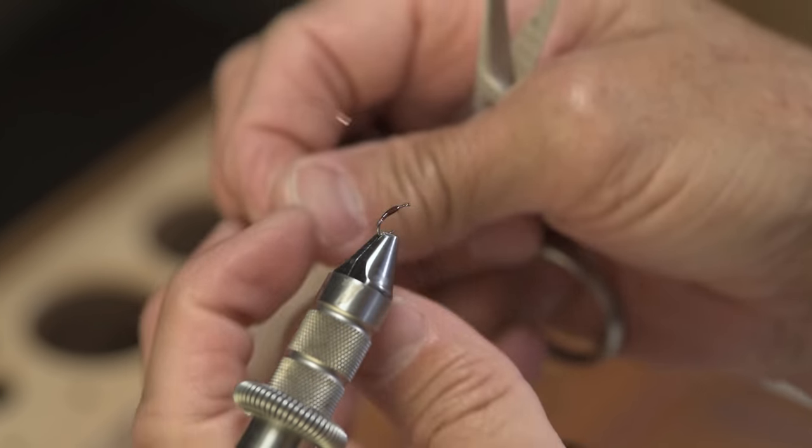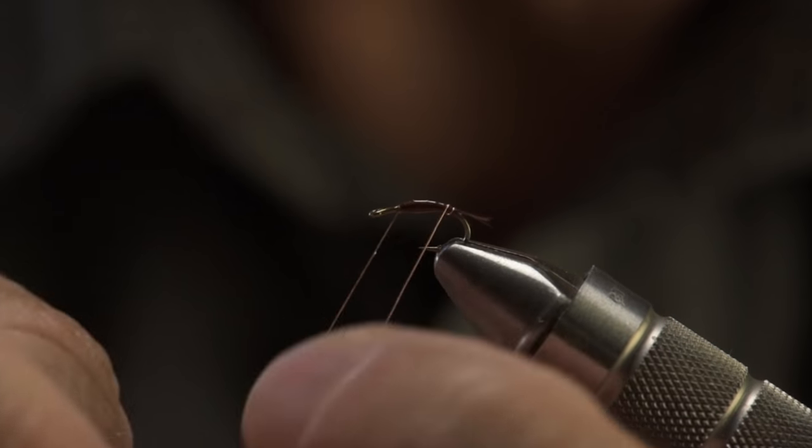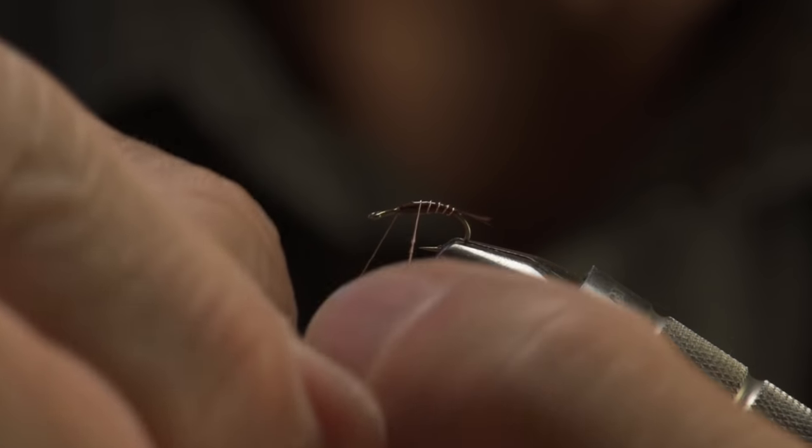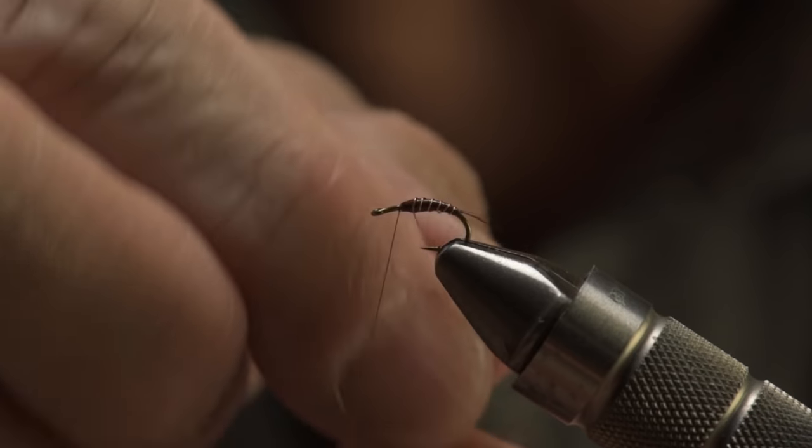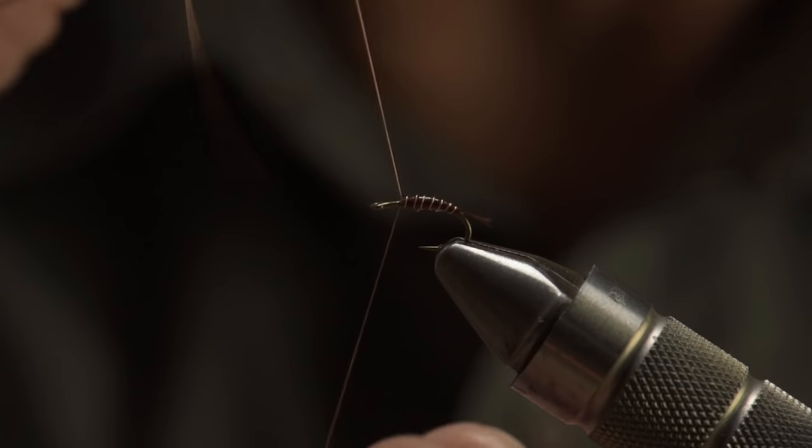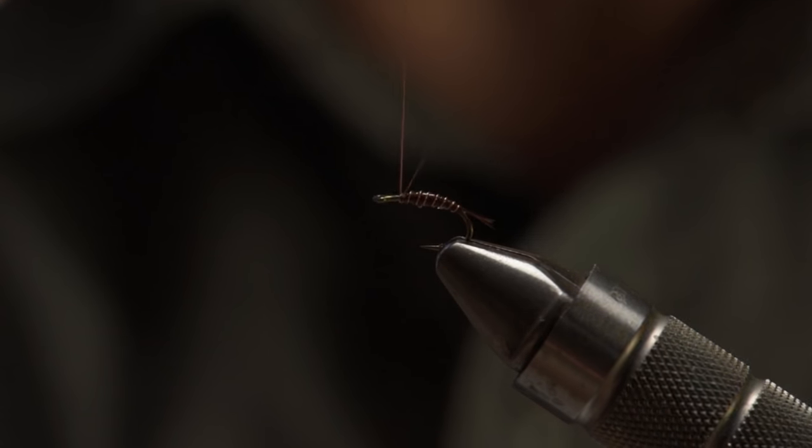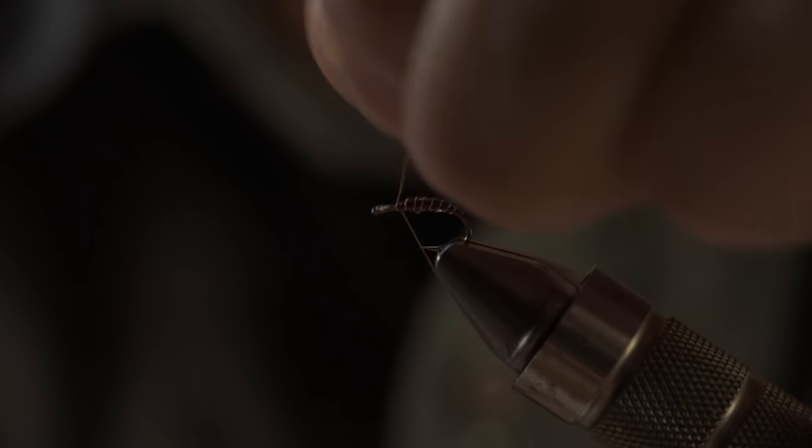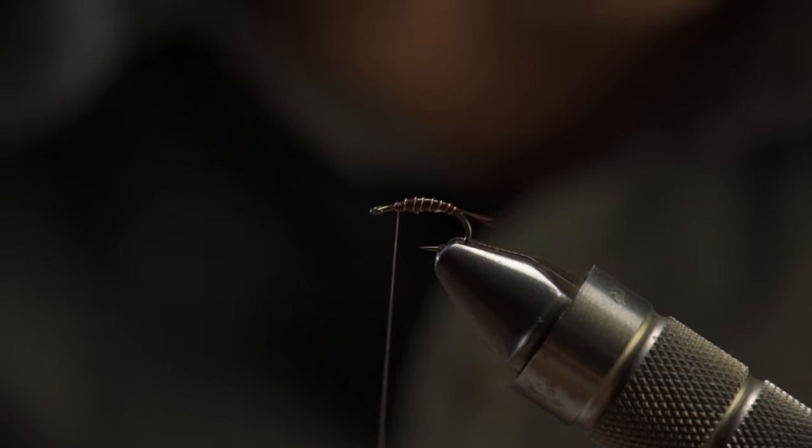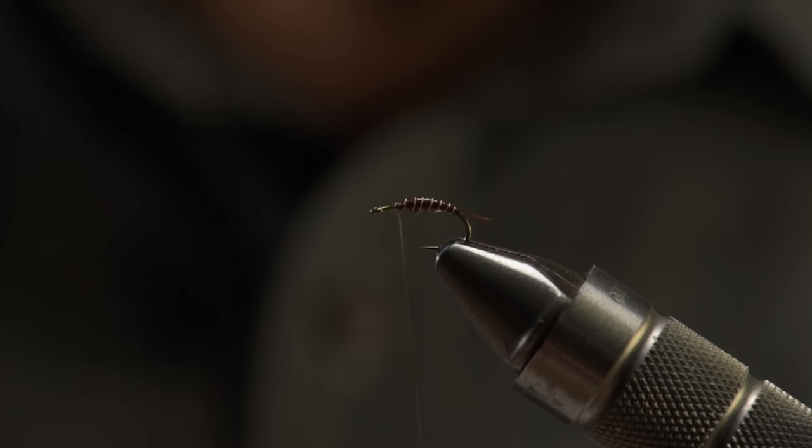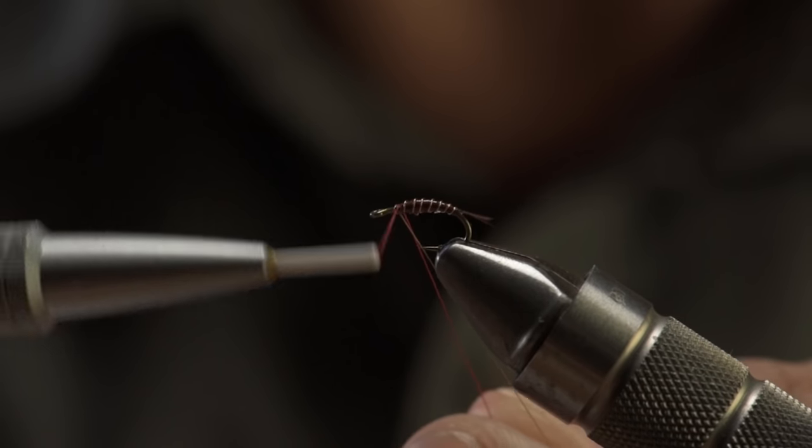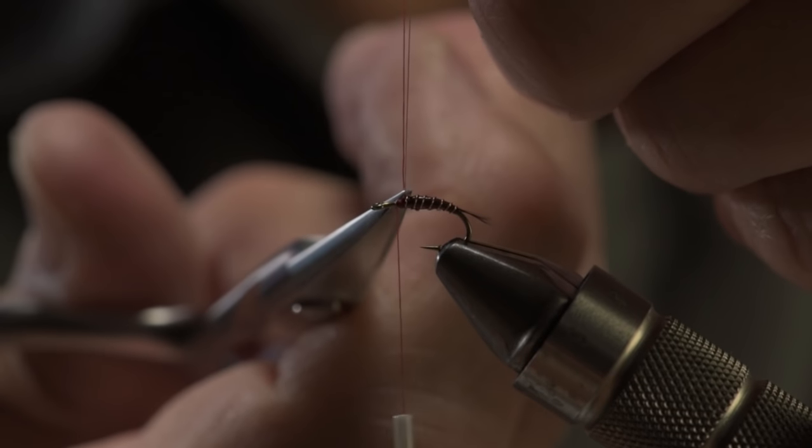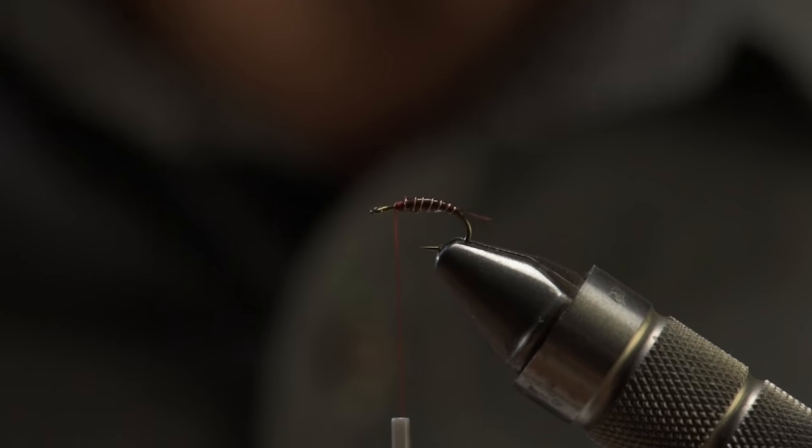And then grab my wire and start ribbing up this body. If you get a little bit more taper than you want and this wire wants to move on you, just more tension. Just hold that wire as tight as you can and it'll come right into place. Helicopter that off. It'll break right off. And then at this point, I'm going to go ahead and change my thread colors. I'm just going to put my thread in there, capture my other color, and just cut that right off.